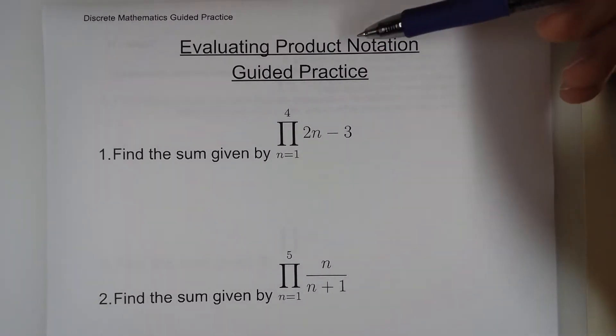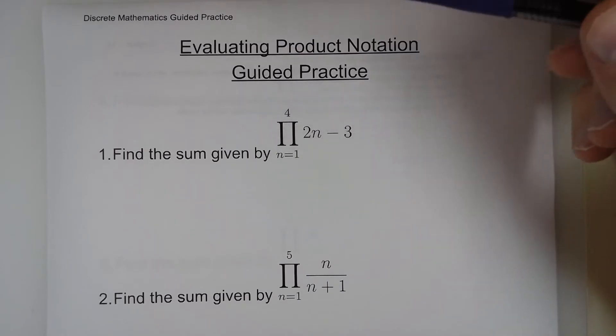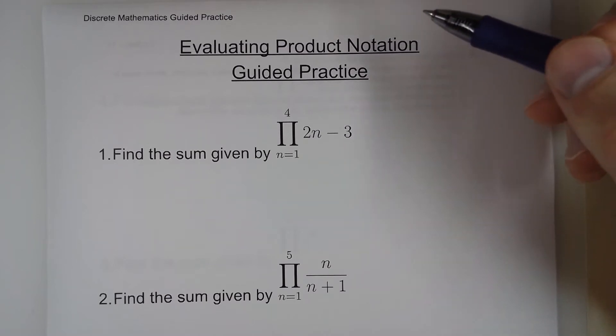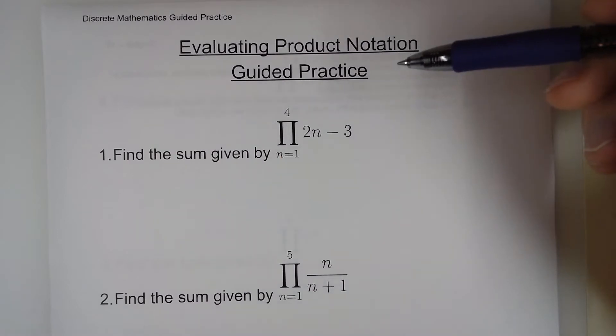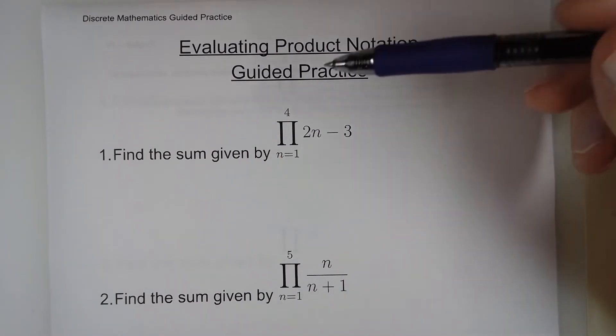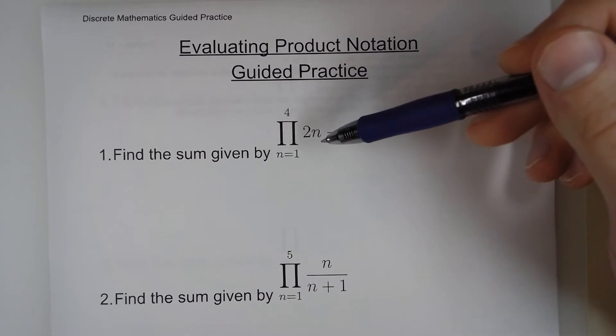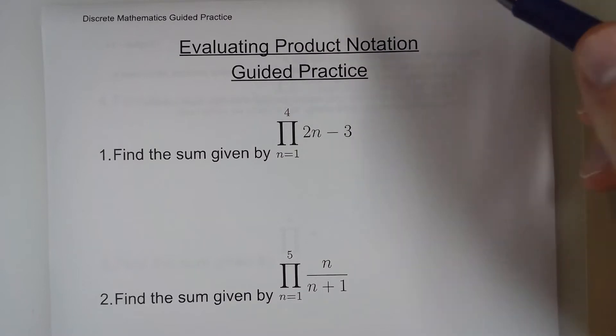Here we're evaluating product notation. In a previous video, linked in the upper left, we evaluated summation notation. That's given by the Greek letter sigma, where we found each term and we added them up. But here we're using pi notation, which tells us that when we find the terms, we don't add them, we multiply.